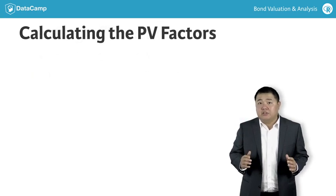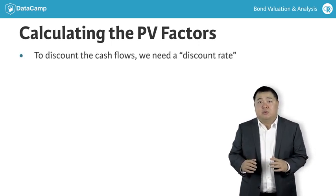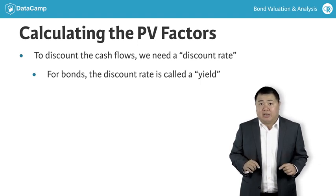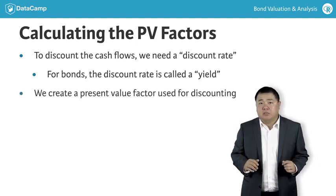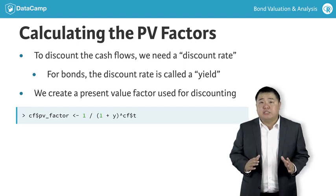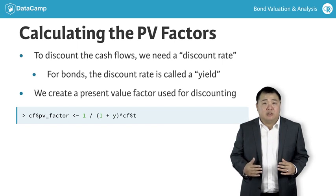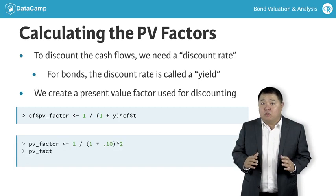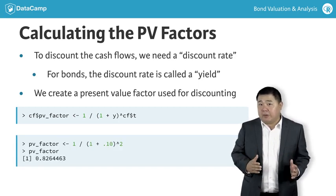Next, we need to calculate a present value factor to discount each bond's cash flow. The discount rate for bonds is called the bond's yield. We will discuss yields in more detail in Chapter 2, but for now assume that the yield is given. The present value factor, called PV factor, is equal to 1 over 1 plus the yield raised to the time index T. For example, if we have a discount rate of 10%, the PV factor for cash flows received two years from now is 1 over 1 plus 10% raised to the second power.